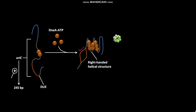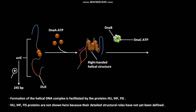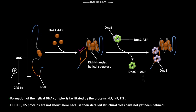This is the denatured DUE region. Formation of the helical DnaA complex is facilitated by the proteins HU, IHF, and FIS. These proteins are not shown here because their detailed structural roles have not yet been defined. In the next step, DnaC·ATP complex bound to the DnaB hexamer helps the DnaB hexamer to bind to each DNA strand. As a result, a complex is formed in which DnaB hexamers are bound to each DNA strand, with the release of DnaC, ADP, and Pi. The DnaB helicase activity further unwinds the DNA in preparation for priming and DNA synthesis.